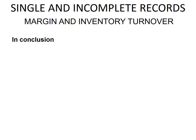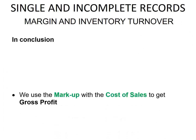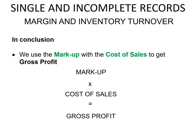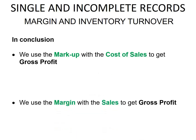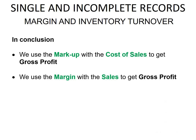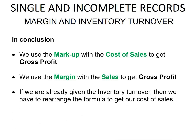In conclusion: we use the markup with the cost of sales to get the gross profit — formula is markup multiplied by cost of sales equals gross profit. We use the margin and the sales to get the gross profit — formula is margin multiplied by sales equals gross profit. Lastly, if we are already given the inventory turnover, we rearrange the formula to get our cost of sales.